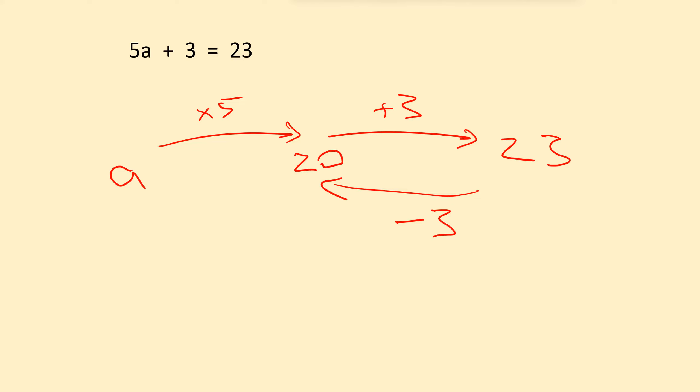And then we do the inverse of the other step. Now, originally it was times 5. The inverse of times 5 is going to be divided by 5. So we're going to take that 20 that we now have, and we divide it by 5. And 20 divided by 5 is 4.